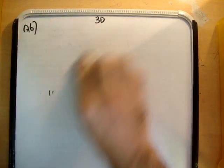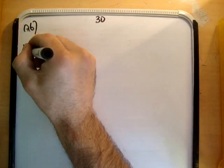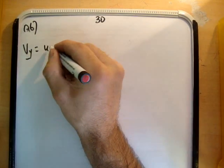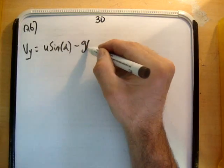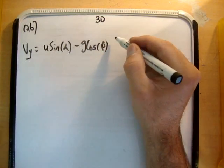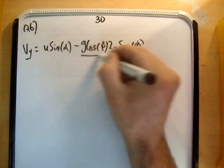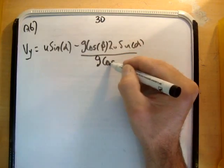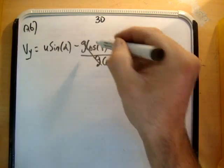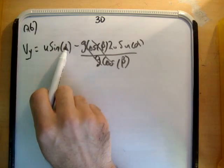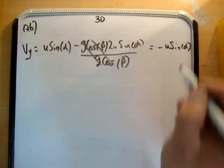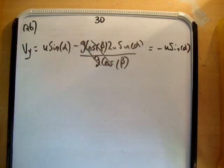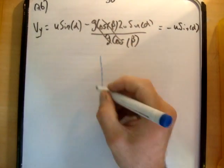Similarly, v sub y will be equal to u sin alpha minus g times the cos of beta times 2u sin alpha over g times the cos of beta. Now if you look here, the g's cancel, and so do the cosines. So left with u sin alpha minus 2u sin alpha equals negative u sin alpha. So the question is, is that value for v sub y correct? And the answer is yes. And the reason for that is as follows.